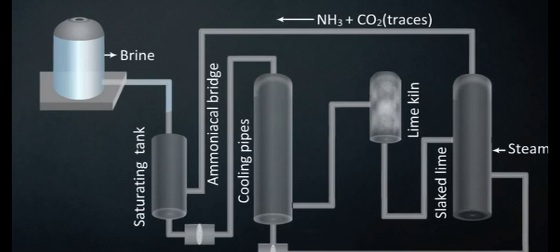Firstly, about 30% brine solution is pumped into an ammonia absorber. A mixture of ammonia and a small amount of carbon dioxide is bubbled through the brine solution so that it gets saturated with ammonia.